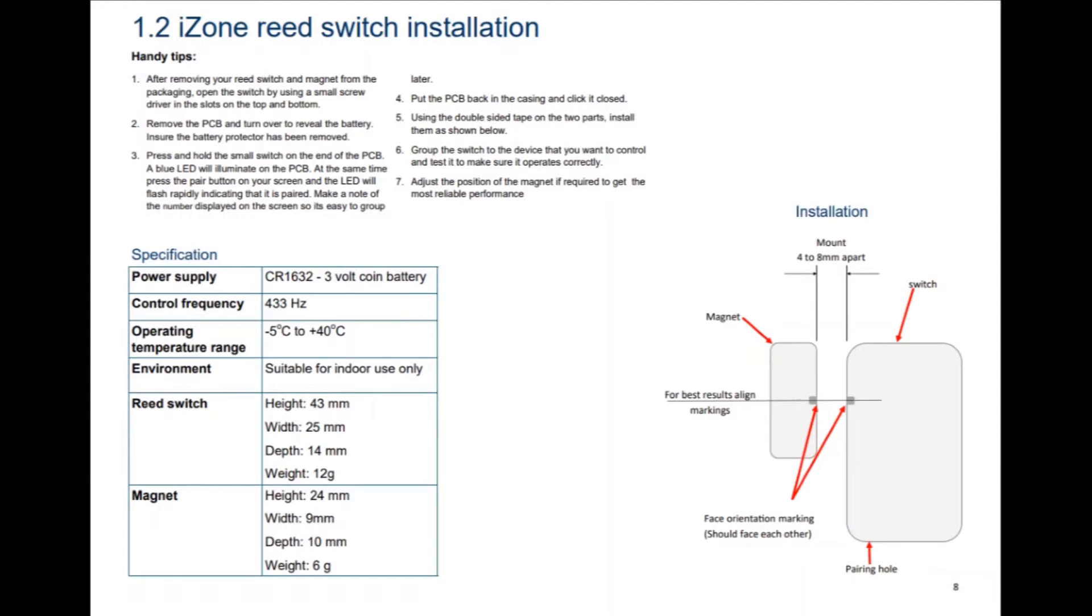Open the door and check the icon changes the door position to open. Close the door and check the icon changes back to closed. You may need to make some minor adjustments to the position of the magnet to ensure the feedback from the reed switch correctly reflects the position of the door.